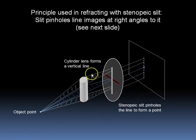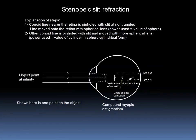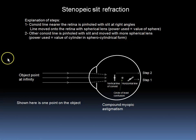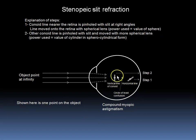We can use this principle to refract a patient. Although we don't often use Stenopaeic Slit refraction clinically, it is instructive to understand optics. The theoretical advantage of this would be that refraction is still possible if there is a poor red reflex and regular retinoscopy is impossible. So let's go through the steps. Here we have a conoid of Sturm in front of the retina with the horizontal line closer to the retina than the vertical.